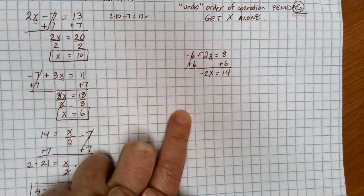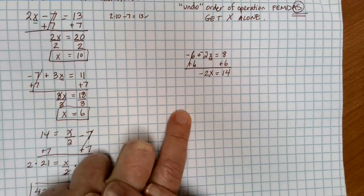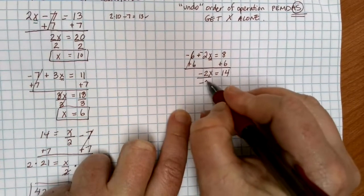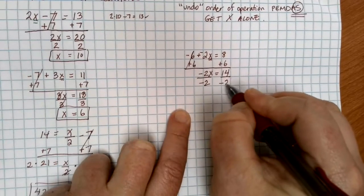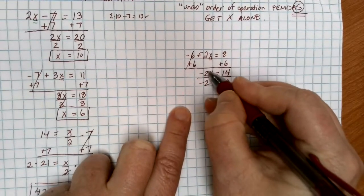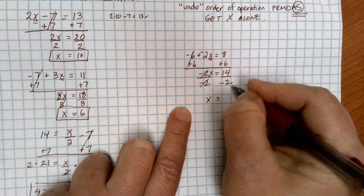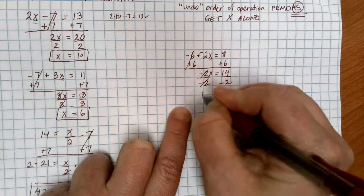And then I'm almost done, but not quite. The x is not by itself yet. It's being multiplied by a negative 2. So to finish, we're going to divide by a negative 2 on each side. Times negative 2 and dividing by negative 2 leaves me just with an x. And on the other side, 14 divided by negative 2 equals a negative 7.